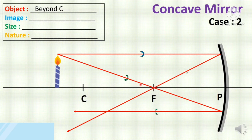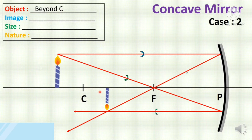Summary for Case 2: the object is beyond C, the image is formed between C and F, the size is diminished, and the nature of the image is real and inverted.